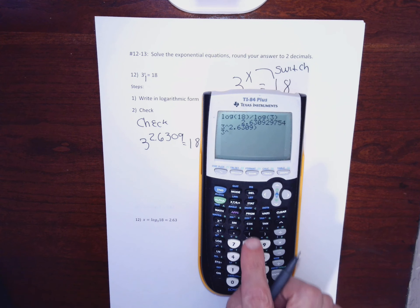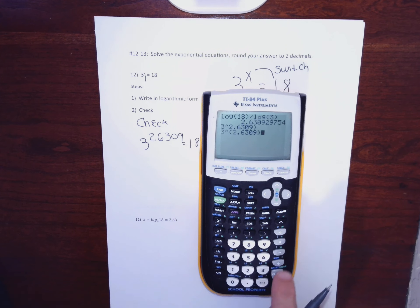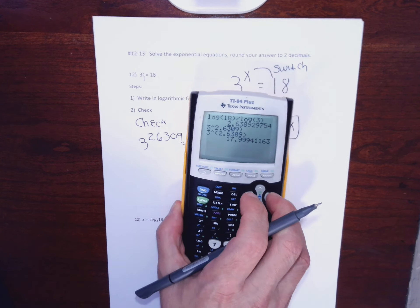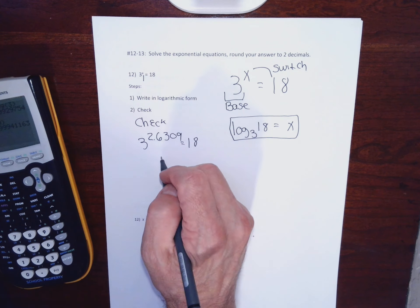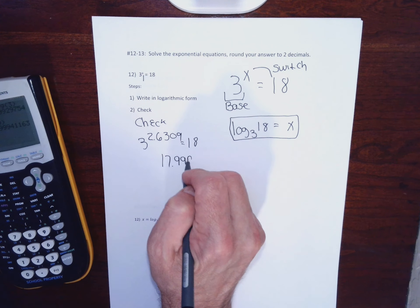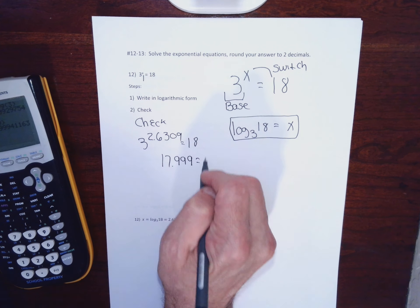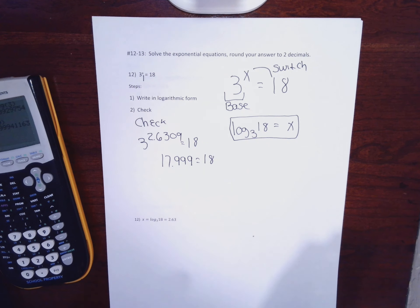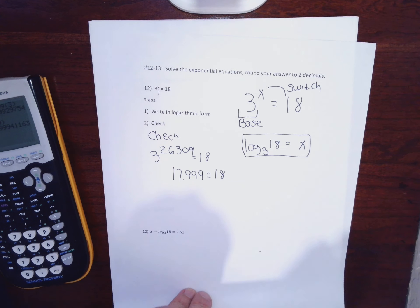3 exponent parentheses 2.6309 parentheses gives me 17.999, which is equal to 18. That's good enough. You don't need the decimal answer — it's only there for checking. That log base 3 of 18 is a better answer.